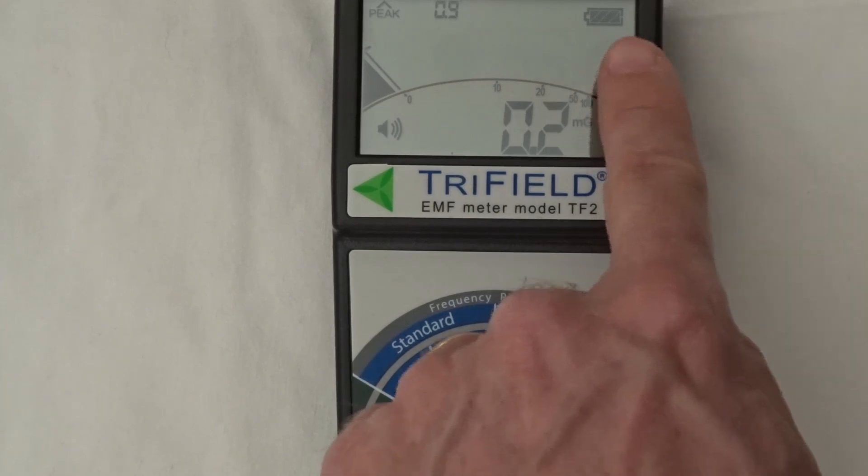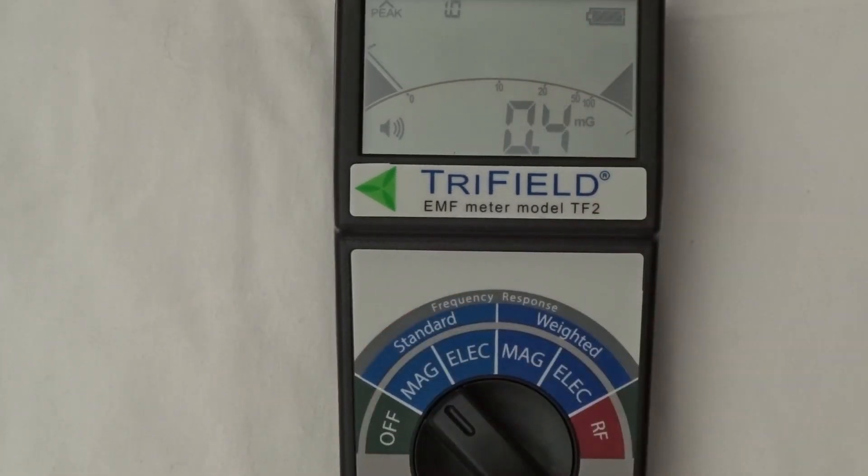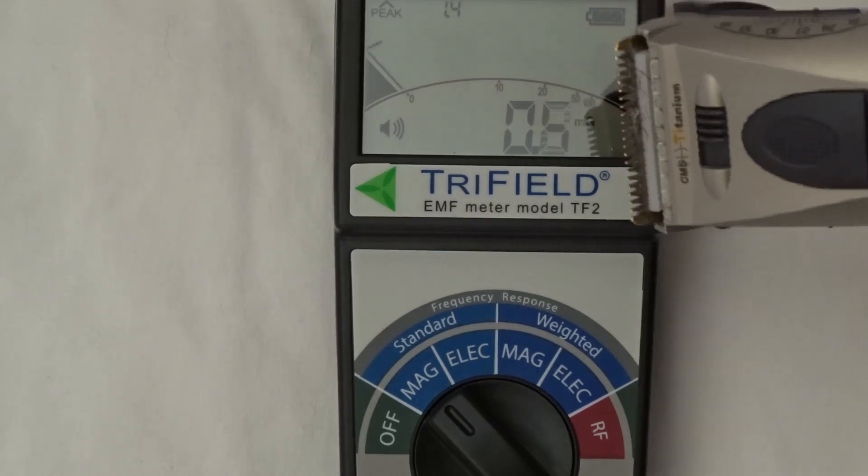The top right here we've got the battery level indicator. So here I've got an electric razor. Watch what happens when I switch this electric razor on.